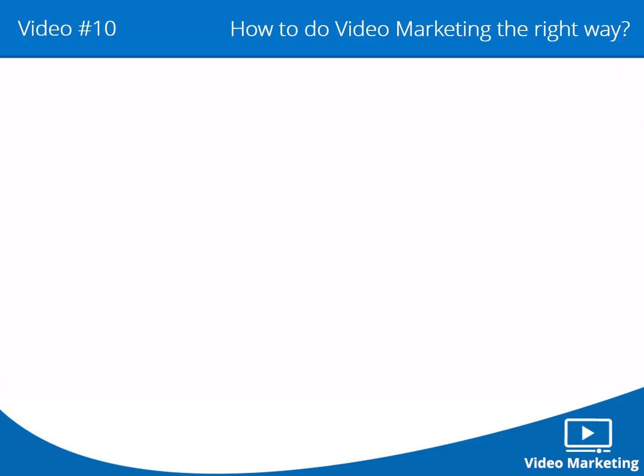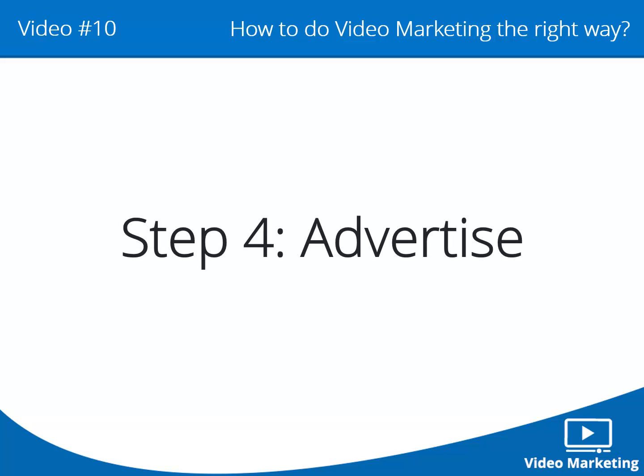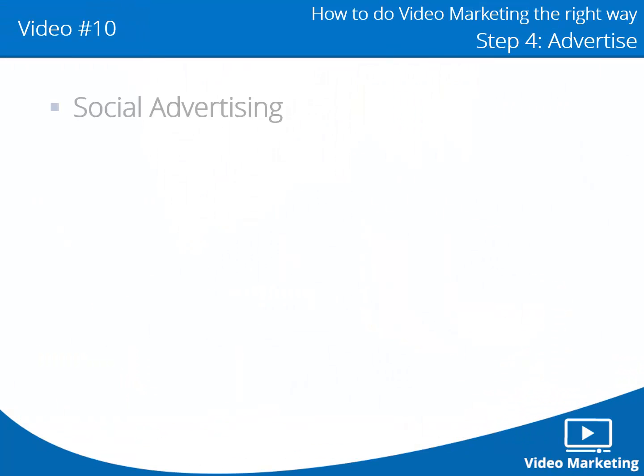Video number 10, Step 4: Advertise. There is always a way to automate anything on the web, and the same is true with traffic to your video. There are other ways you could advertise your video, but you have to remember that the real intention of your video is to make people do something. Social advertising — there are many ideas you could use to make your video go viral.